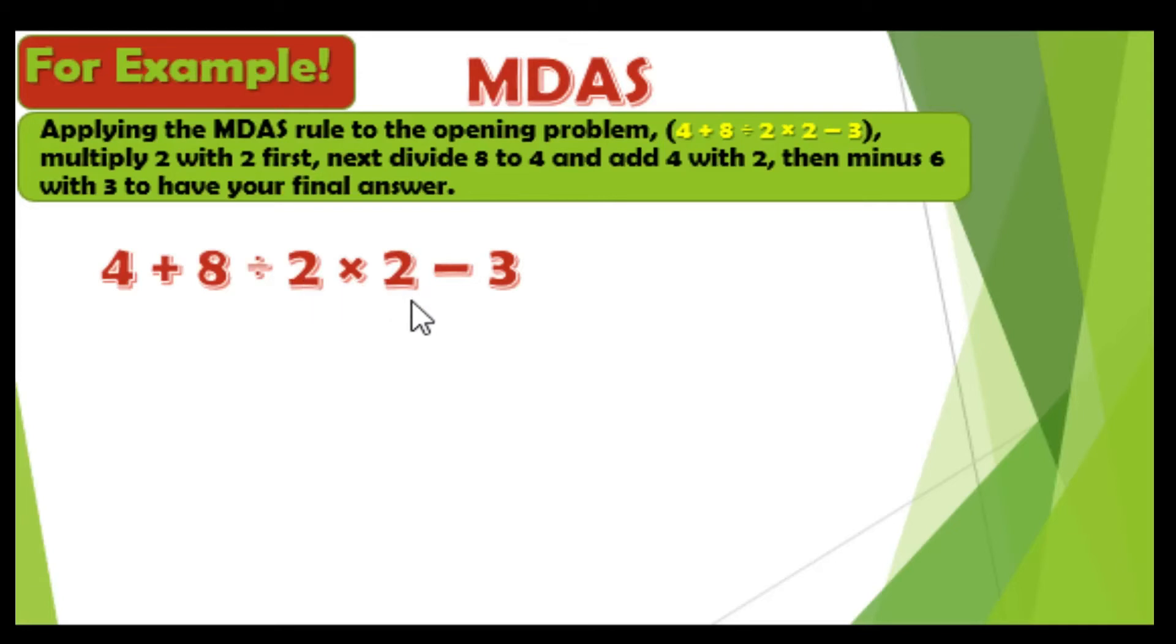2 times 2 is equal to 4. Next, copy this one below, copy this one also below. Next to multiplication is division.